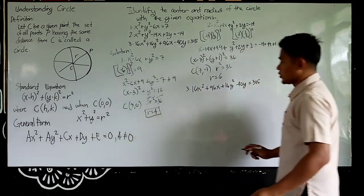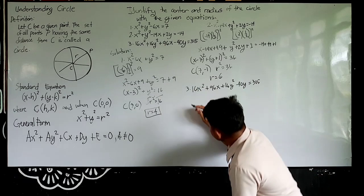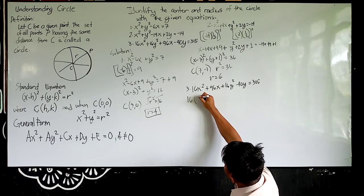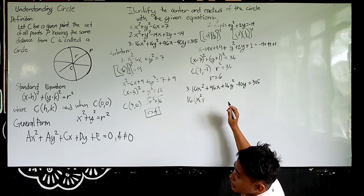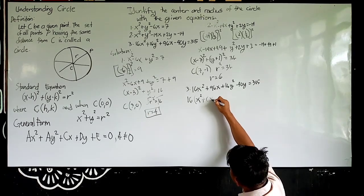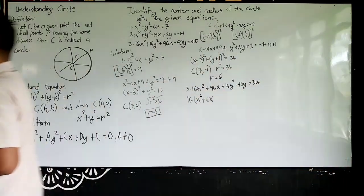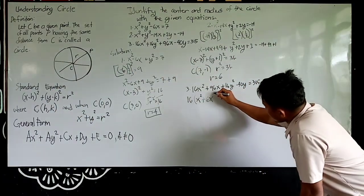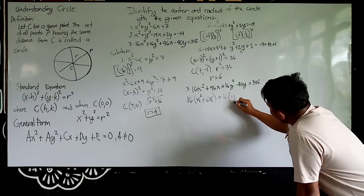So paano, anong gagawin? Simplify. Labas mo yung common nila, 16. So 16 times x² - ilan ng 16 sa 96? Obviously, 6x. Then ito medyo complicated ito. So y². Ito, ilan ng 16 sa 40? Usually, dalawa lang at may remainder. So anong gagawin ito? I would like to emphasize this to you. Ito, 16y² - 40y. Anong factor ng 40 sa 16? You simply divide 40 over 16.